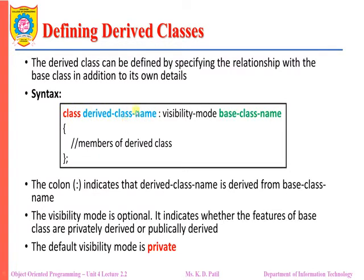Here I have shown the syntax for defining a derived class. We use the keyword 'class' followed by the name of the derived class, then a colon — which indicates the derived class is derived from the base class — followed by the visibility mode and the name of the base class. The visibility mode is optional and indicates whether the features of the base class are privately or publicly derived. Inside the braces we have the members of the derived class.